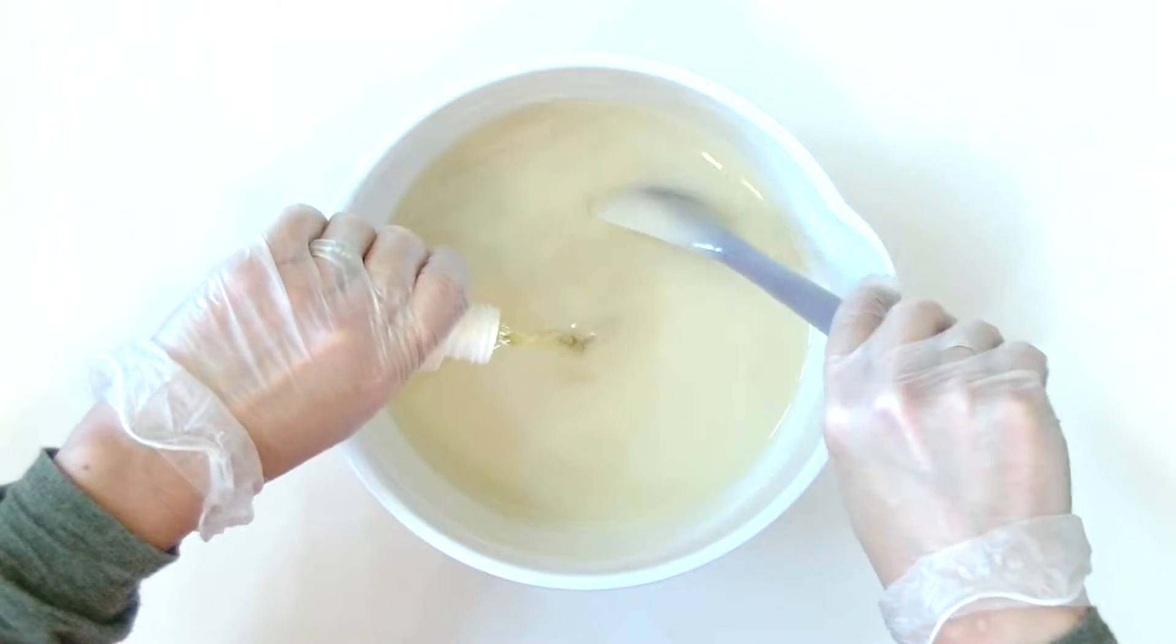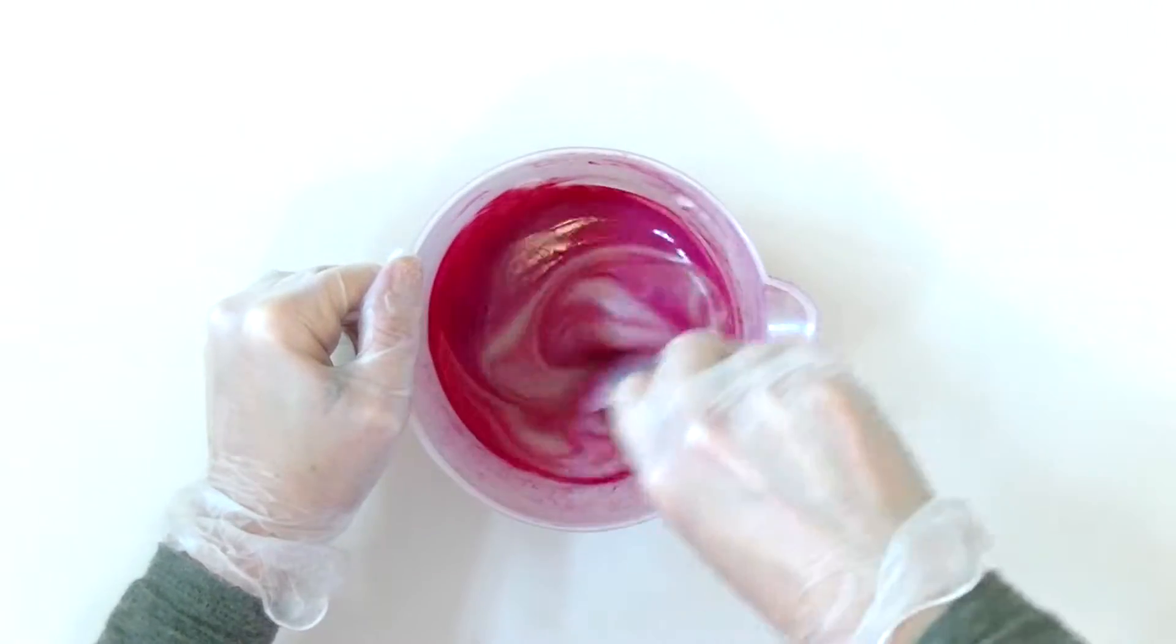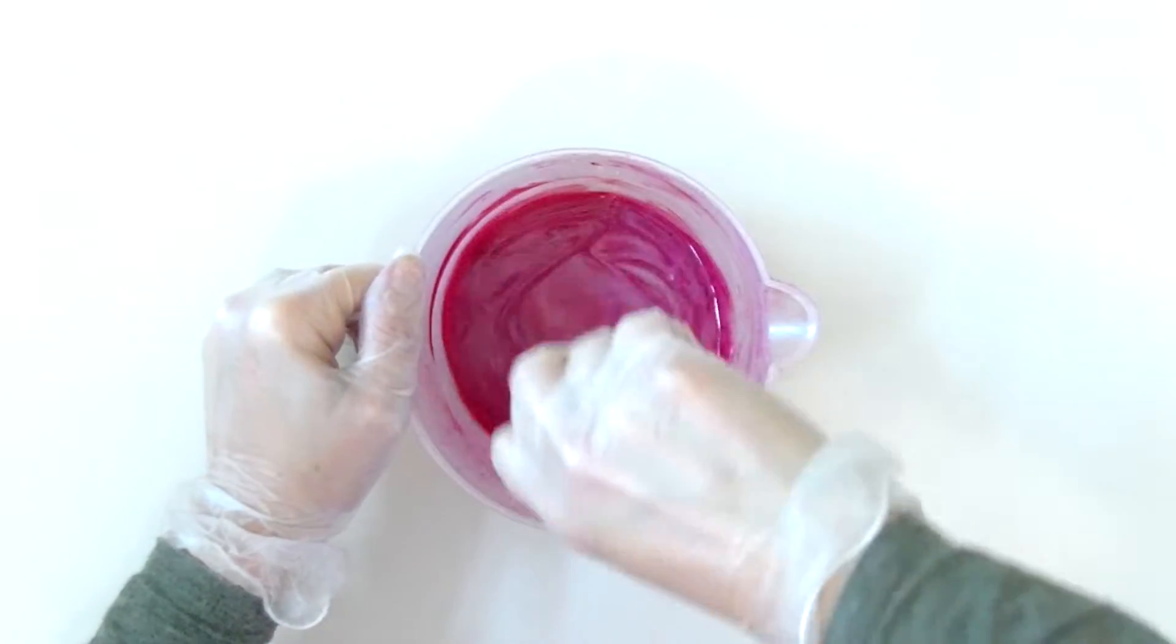I use a large spoonula to stir in the fragrance oil and the small spoonulas to mix the mica and soap.